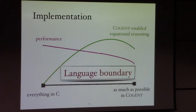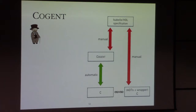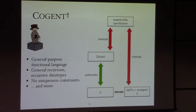The question of language boundary is another challenge. So here we introduce Cogent-up, a language extension to Cogent, which tries to solve the issues just mentioned. Cogent-up is a general-purpose Turing-complete language which allows general recursion and recursive data types. It also has no uniqueness constraints like Cogent does, so it's roughly like a conventional functional programming language such as Haskell, with more features to come.